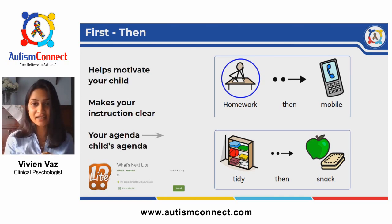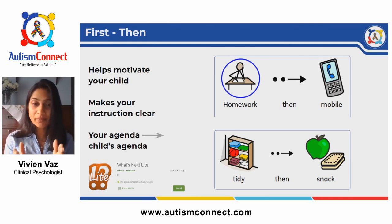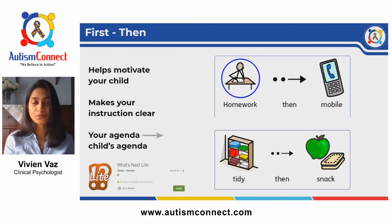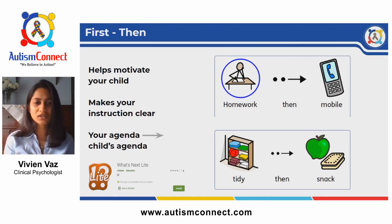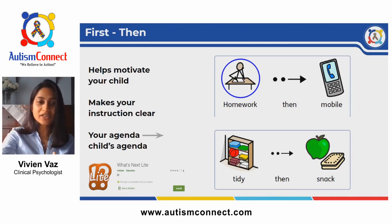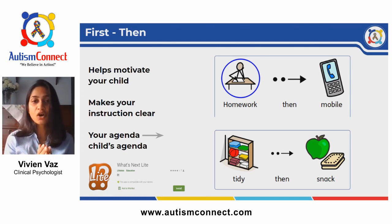Knowing that there is a reward at the end of a task can push your child to put in extra effort. One way to help your child understand there is a reward at the end of an unpleasant or difficult task is by using a first-and-then board. You can make a simple first-and-then board using objects, pictures, or even an app on your phone — I use an app called 'What's Next Lite,' and I've linked a picture in the slide. It's really simple: first my task, then your task.